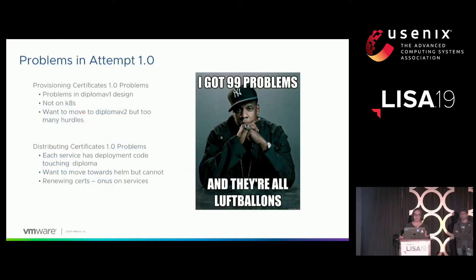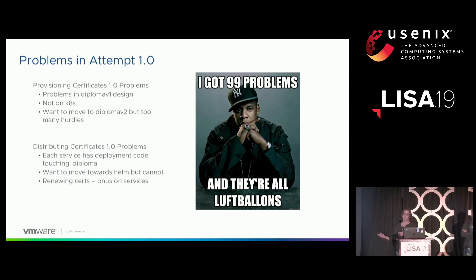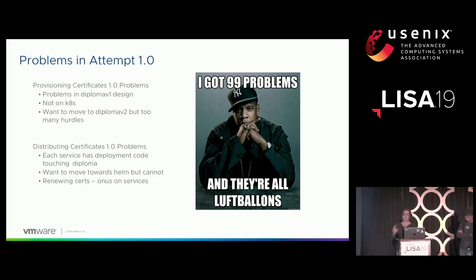In summary, the problems were: issues in Diploma V1, including that it was not running on Kubernetes but directly on EC2 — requiring separate scripts and infrastructure lacking parity with our regular microservices management. For certificate distribution, each service had deployment code talking to Diploma; we wanted to move to Helm but couldn't. Certificate renewal was the responsibility of each individual service. And switching to Diploma V2 required updating all those scripts simultaneously. So we developed a framework called Chancellor. Akshay will now take over.